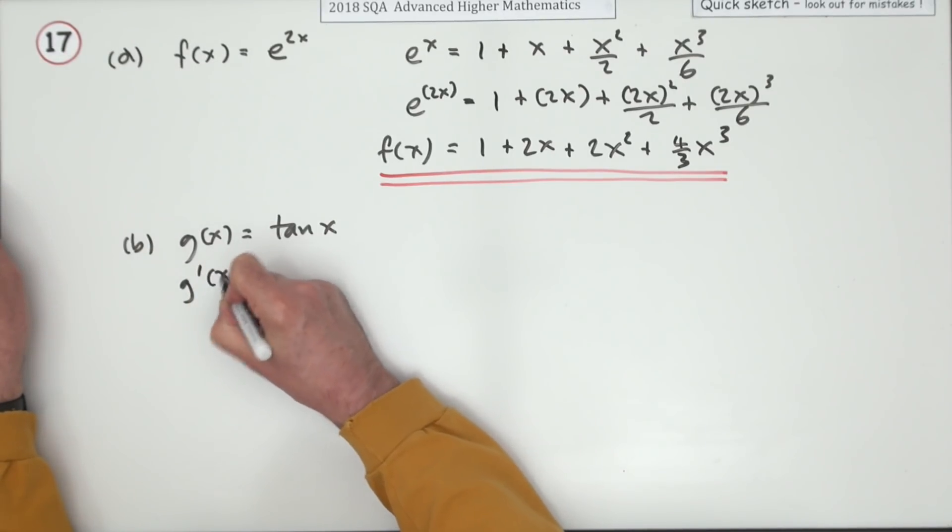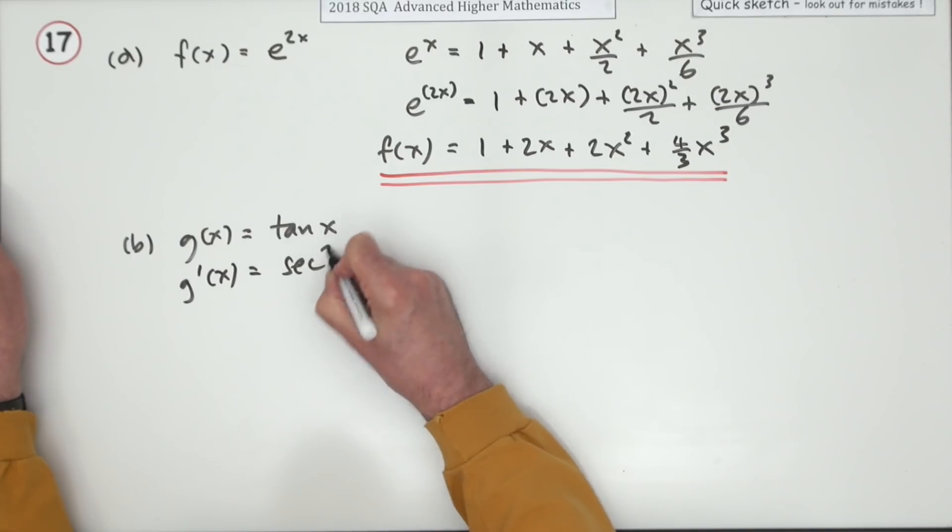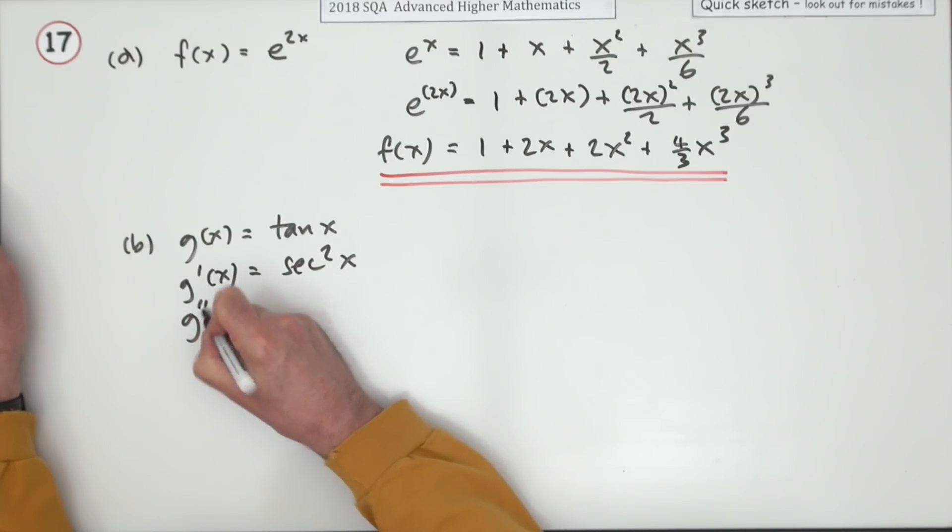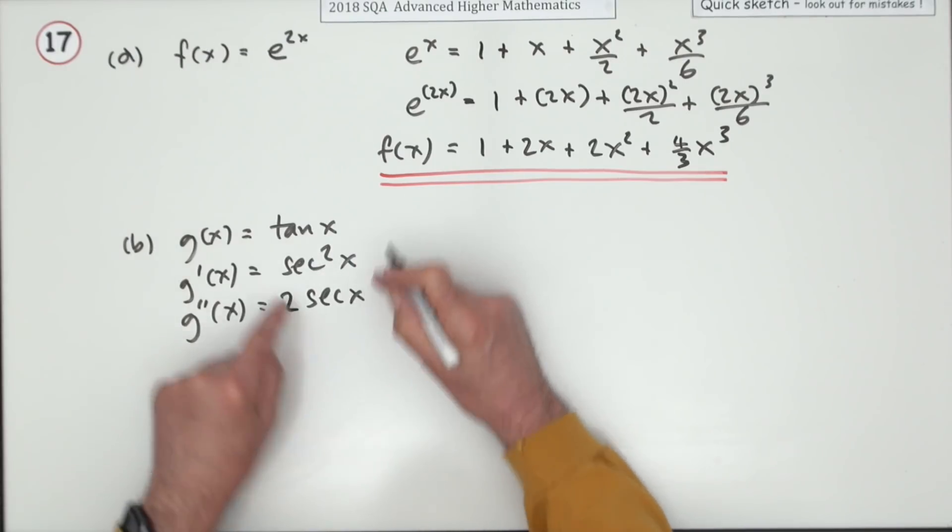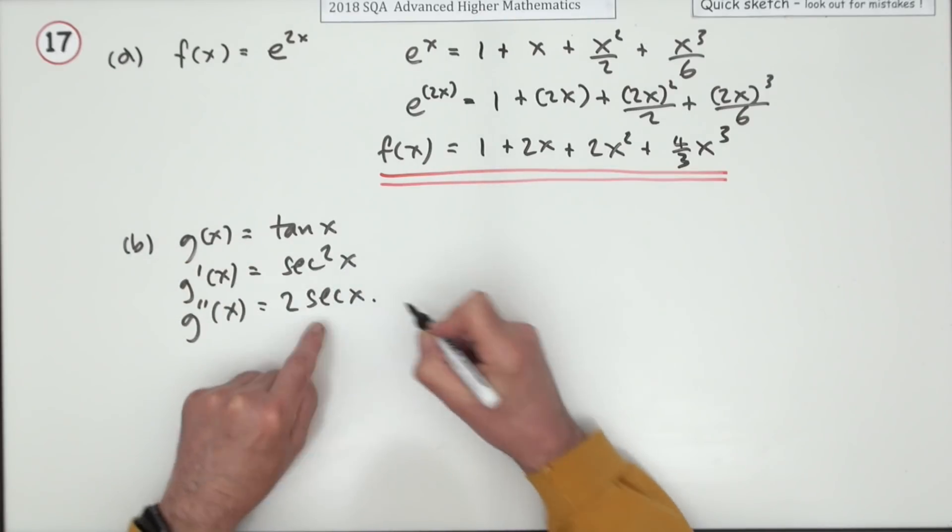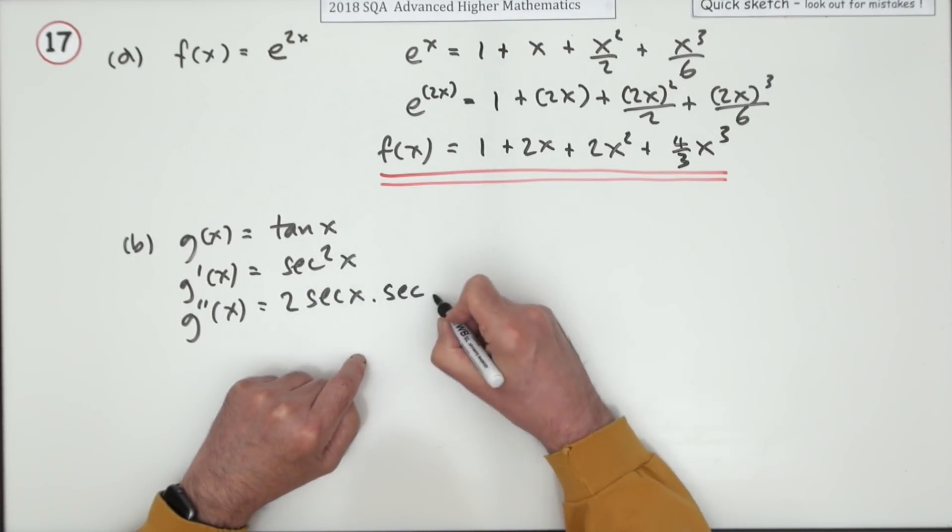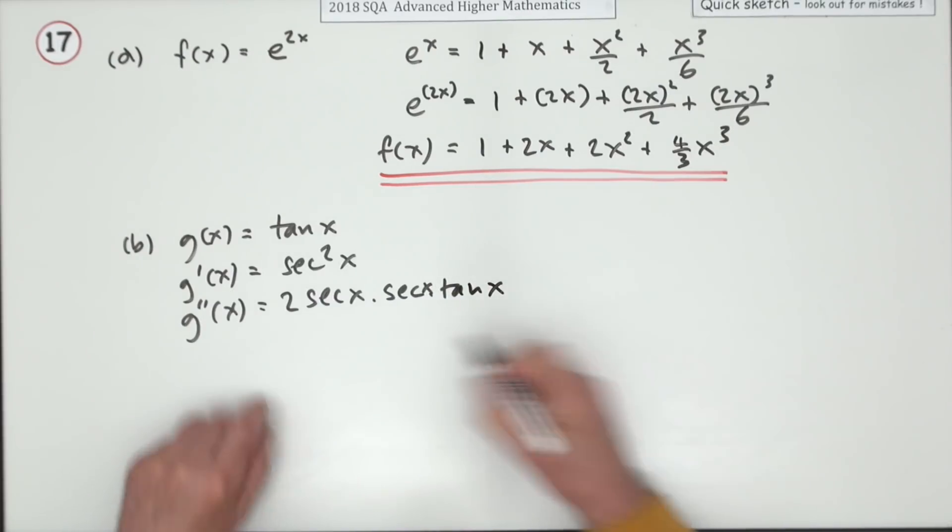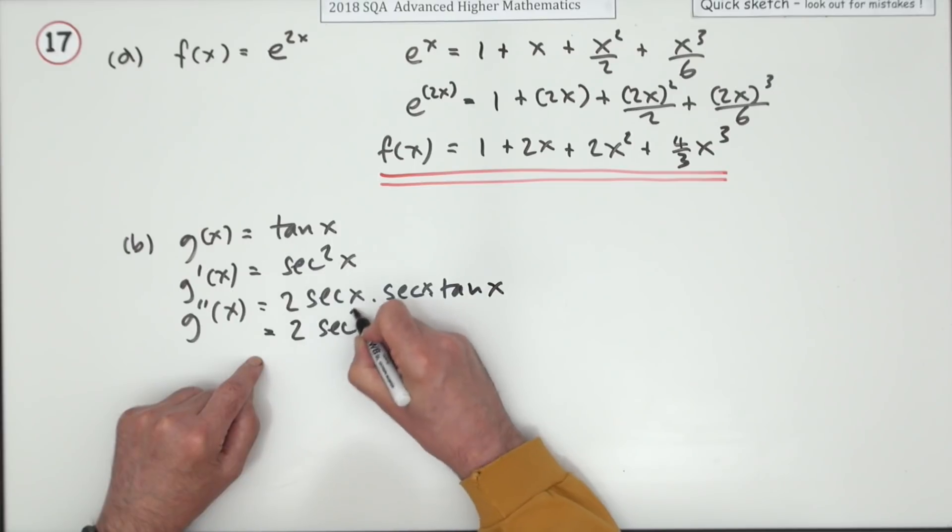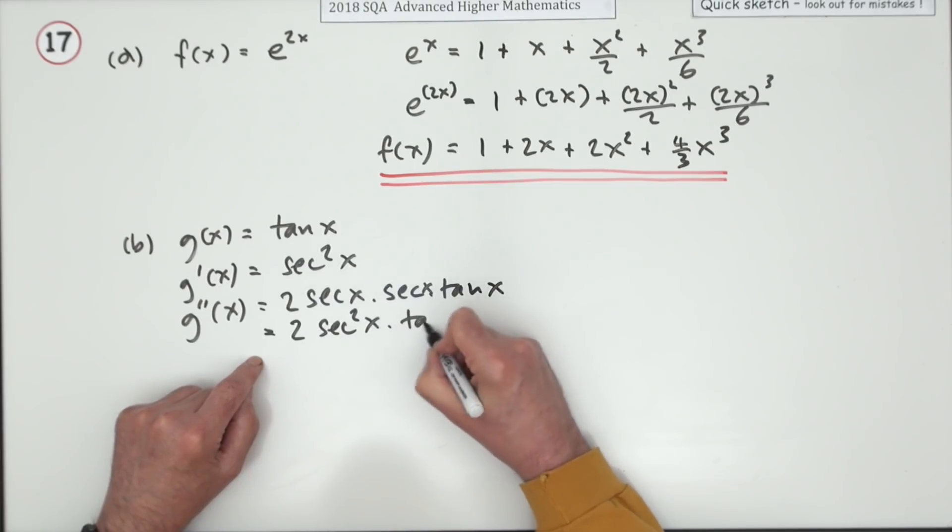Well let's just work our way through it then. The first derivative will be sec squared x. The second derivative will be, now that's a function of function, so it'll be 2 sec x, that's the outside, down inside the derivative of sec is sec tan. Tidy that up, 2 sec squared tan x.